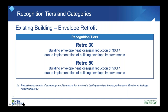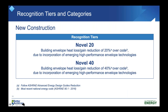Once you've made your final design decisions and submitted to us, there are several recognition tiers available. For an existing building envelope retrofit, you're eligible for recognition at either 30% or 50% improvement — that's improvement over your base building. For new construction, you're comparing your building as designed to code, so the recognition tiers are 20% improvement or 40% improvement over code.